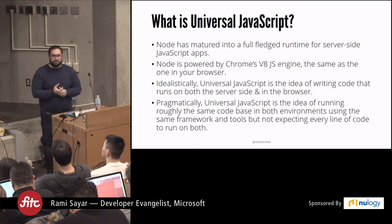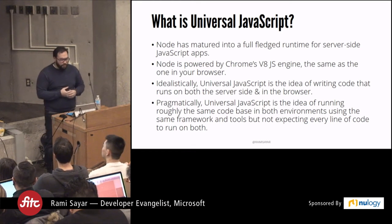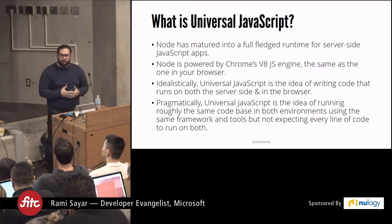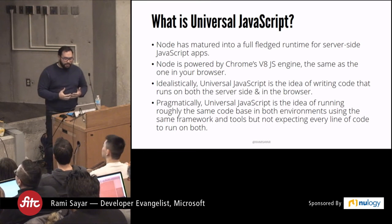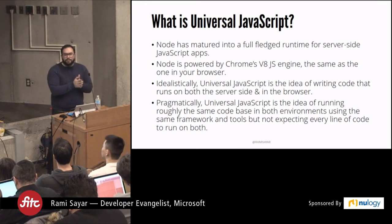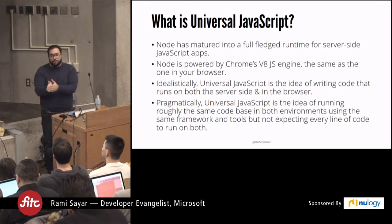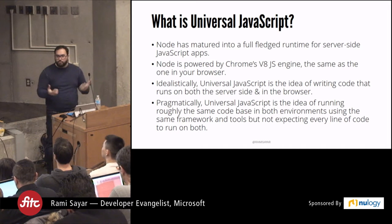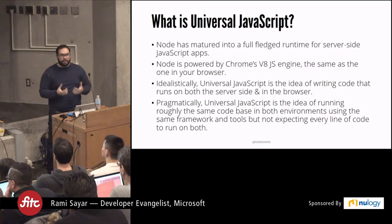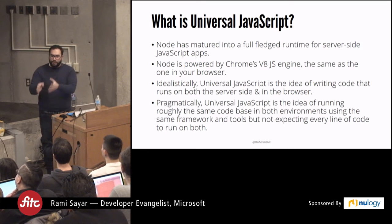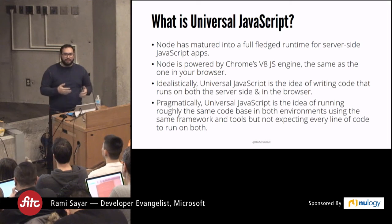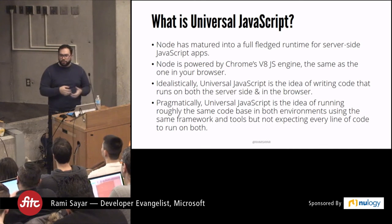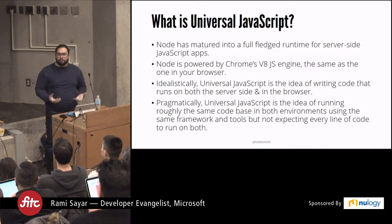The idea is to write code that runs on both the client and the server side. Node has matured very well and is used in full-time production applications including at Microsoft. The V8 JavaScript engine that Node is based on is from the Chrome project — it's the same one that's in your browser. So if we have the same runtime in both the browser and in Node, and we're already comfortable with JavaScript, why not use basically the same application code that could run on both the browser side and the server side? We don't have to rewrite the same views in Express on the back end; we could just use our React app and have it render on the back end.